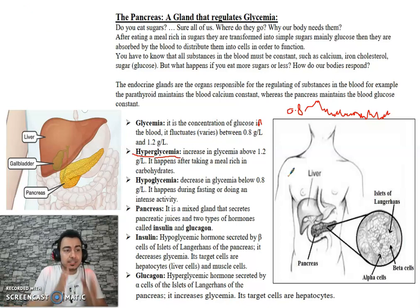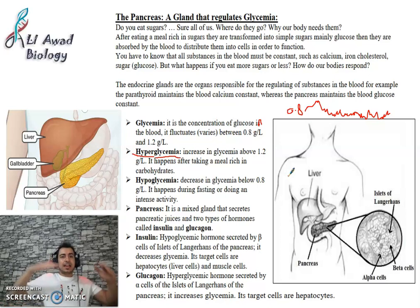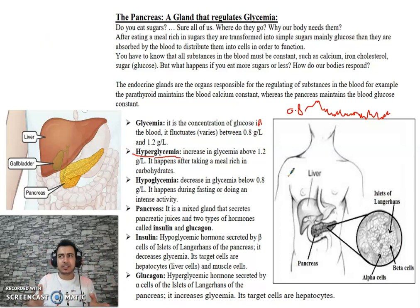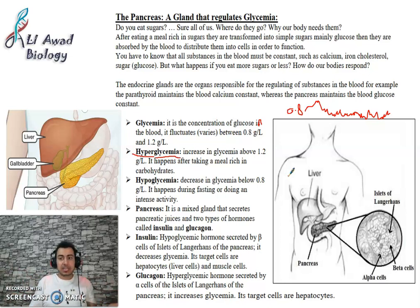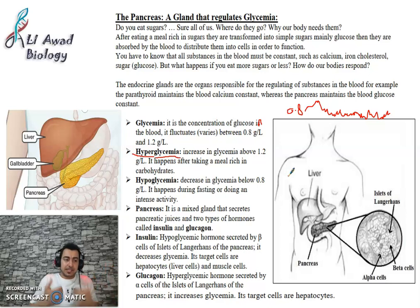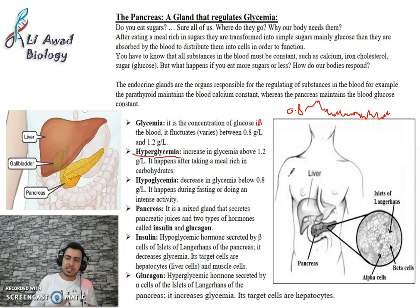However, for a normal individual, after eating a meal, glycemia should never exceed 1.6 or 1.7 g/L. If it does, that person has diabetes. A normal healthy person's blood sugar does not go above 1.6 or 1.7 g/L after eating.